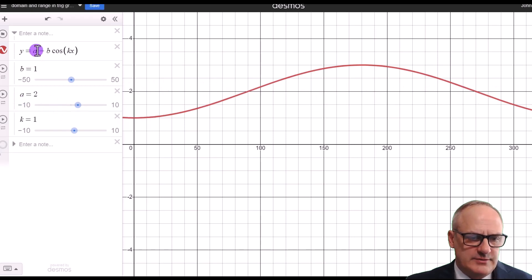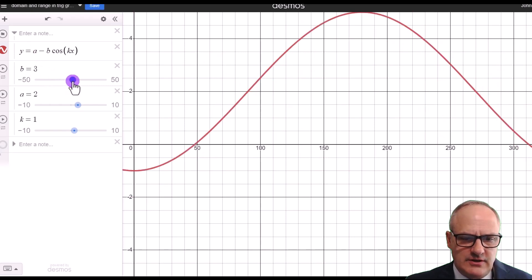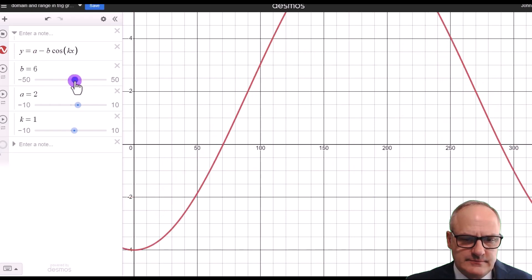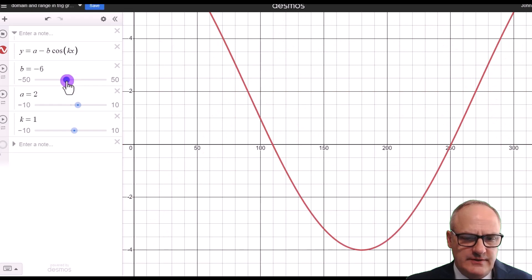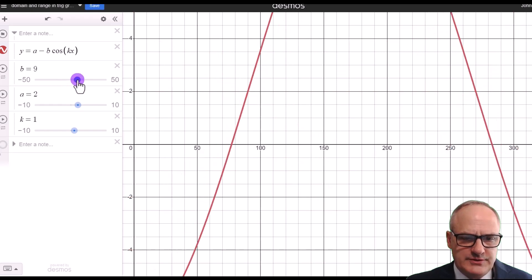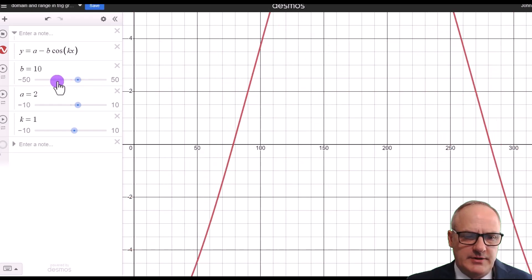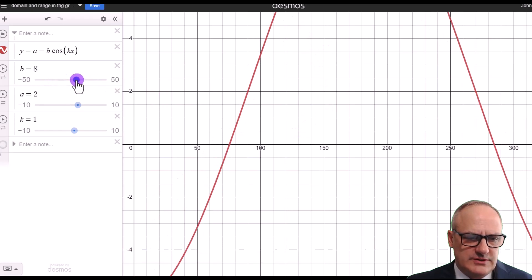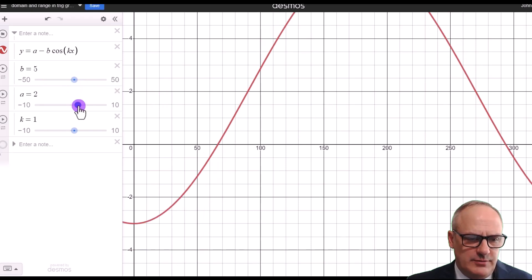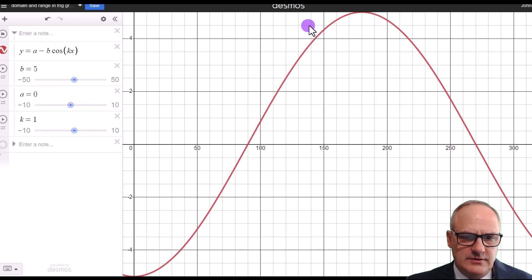So the a bit moves the whole graph up and down, and our b bit stretches it. If b is negative, it flips it. And if you've got positive, it just makes it that many times taller. So it's now 10 times taller. So let's put it back to 5 and put the a back to zero, and you can see it goes between 5 and minus 5 because b has become 5.